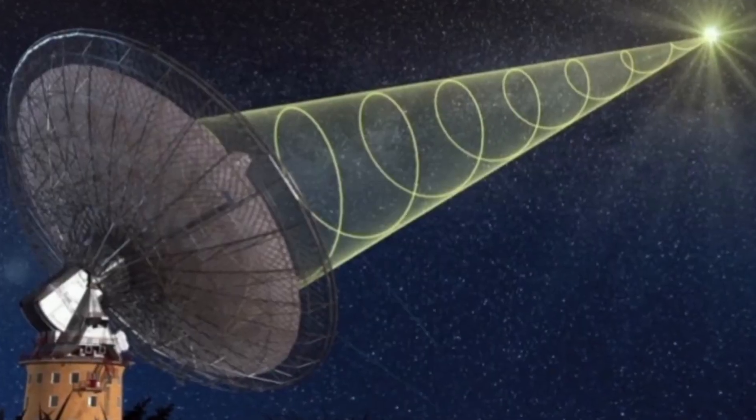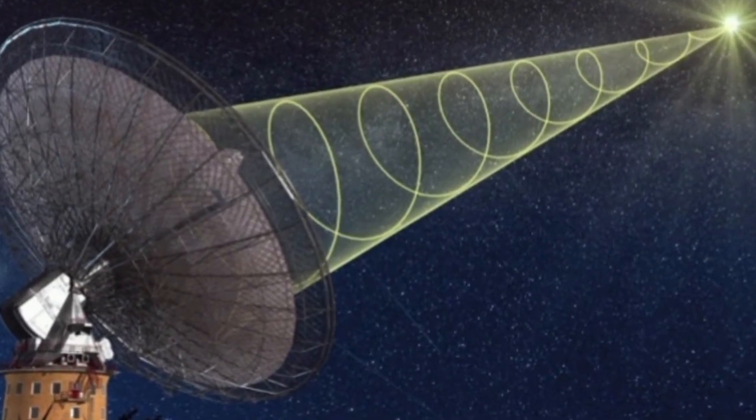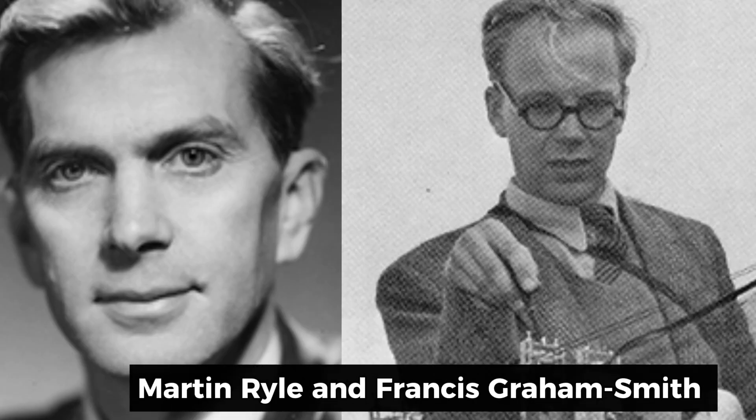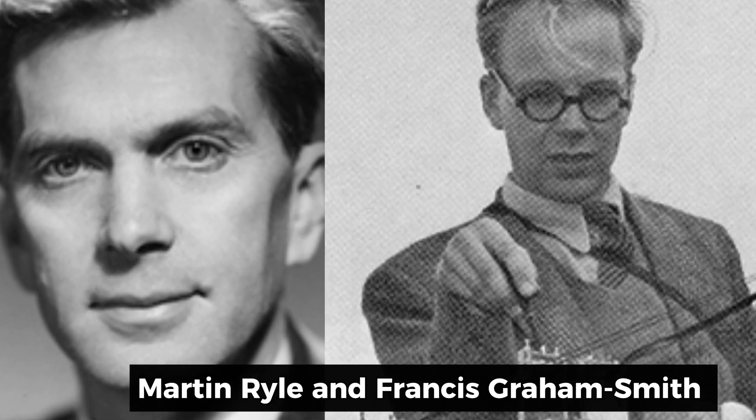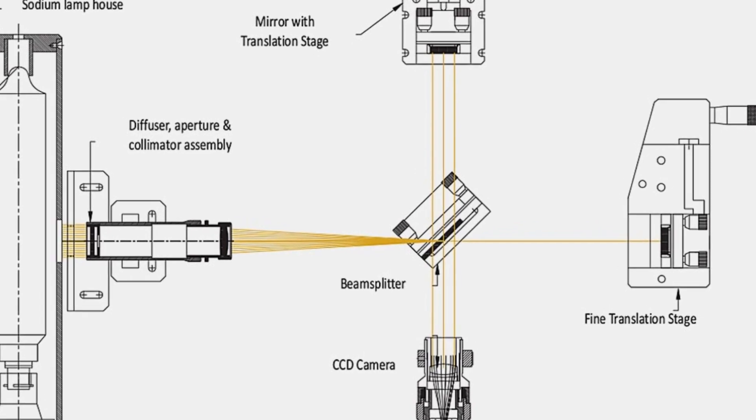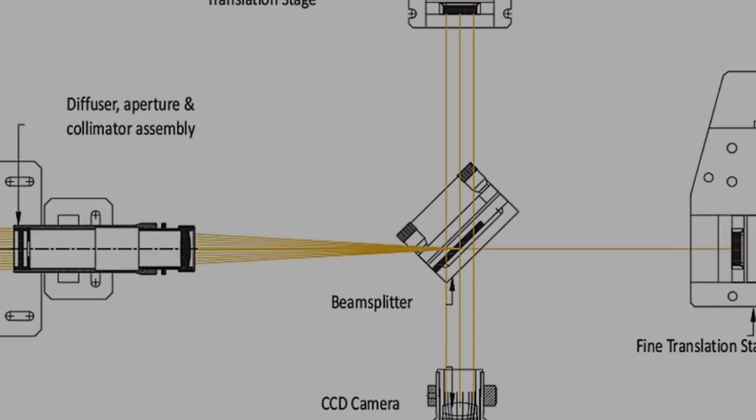Cassiopeia A was also one of the earliest supernova remnants found using radio signals from space. Astronomers Martin Ryle and Francis Graham Smith at Cambridge reported this discovery in 1948 using a device called the Long Michelson interferometer.